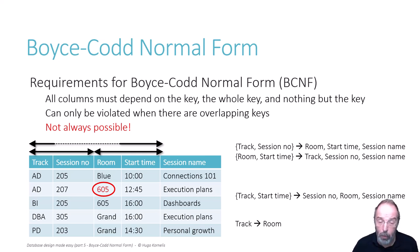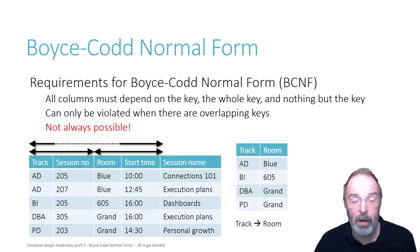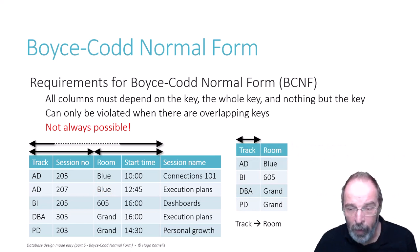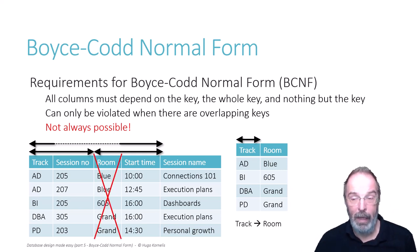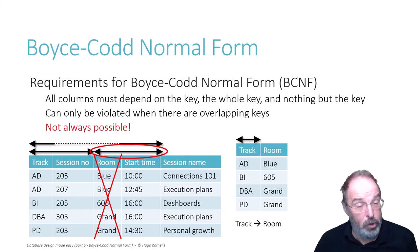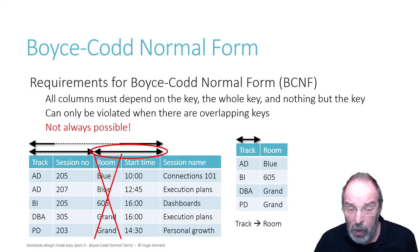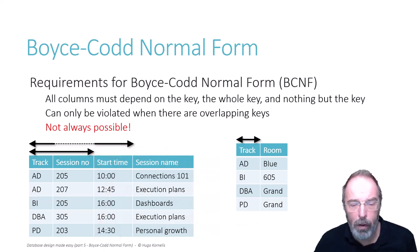So once more, we look at the violating functional dependency — track determines room — which gives us a new table with columns track and room. The key is obviously on the track column, and in this case there is no discussion: the room column must go. And again, we have this problem with a key that we cannot just remove. But this time the key is not an implied key — it is not implied by anything. So if we actually remove this key and remove the room column, then we have an incorrect design.